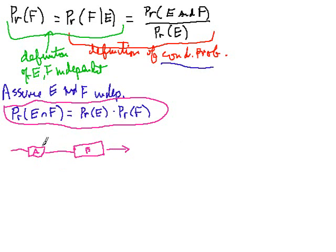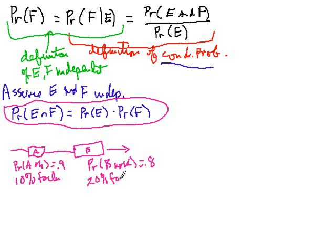What we know is things about how reliable A and B are. Supposing the probability that A works, that A is okay, is going to be 90%. In other words, there's a 10% chance of failure. And supposing part B over here, the probability that it is going to work, let's say 80%, so it's got a 20% failure rate.